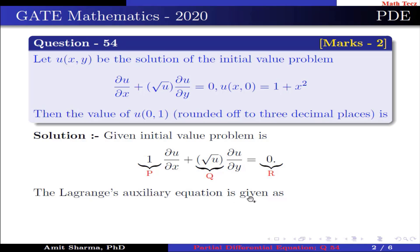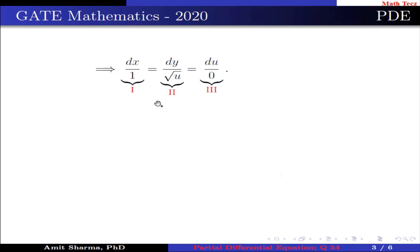The Lagrange's auxiliary equation is given as dx/p = dy/q = du/r, which implies dx/1 = dy/√u = du/0.